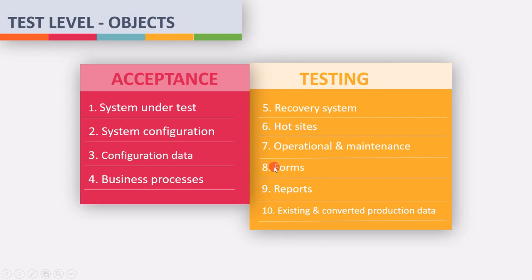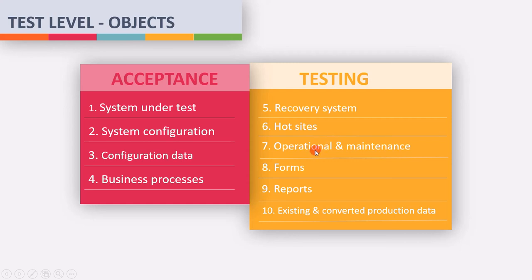Next is the operational and maintenance process, which helps to know how the software should be used or maintained. Next is forms and reports of testing. The last one is existing and converted production data — all data collected during production are used as a test object for acceptance testing. These were the test objects of acceptance testing: system under test, system configuration and configuration data, business processes for a fully integrated system, recovery systems and hot sites, operational and maintenance processes, forms, reports, and existing and converted production data.